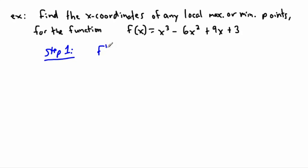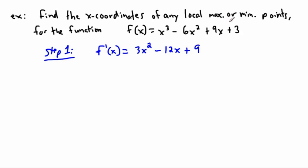So I need f prime of x. Just to get you used to the different notations — sometimes we write y, sometimes f prime, sometimes dy/dx — it doesn't matter. So f prime of x: the derivative of x³ is 3x², the derivative of −6x² is −12x, and the derivative of 9x is just 9. So f prime of x = 3x² − 12x + 9.